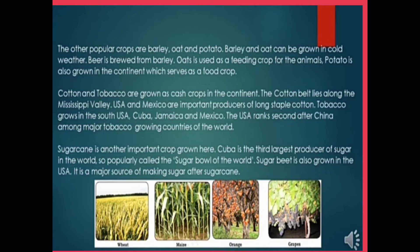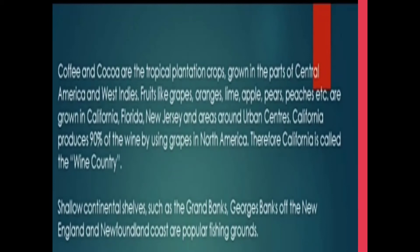Not only cotton and tobacco, even sugar cane is one of the important crops grown here. Cuba is the 3rd largest producer of sugar in the world and is popularly called the sugar bowl of the world. Sugar beet is also grown in the USA and is a major source of making sugar after sugar cane. Another important cash crop is coffee and cocoa.